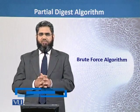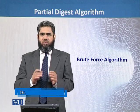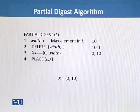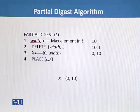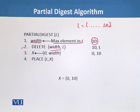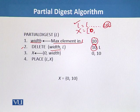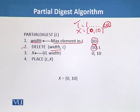We have used the brute force algorithm to find the solution of a partial digest. Now we will add the actual values in the algorithm we have already devised. Here we can see the width — we have already called it the maximum element in L, and we know that the maximum element in L was 10. We have deleted 10 from L, put this value of width in X, and we already decided that 0 is X1. So we now have two values in X: 0 and 10.